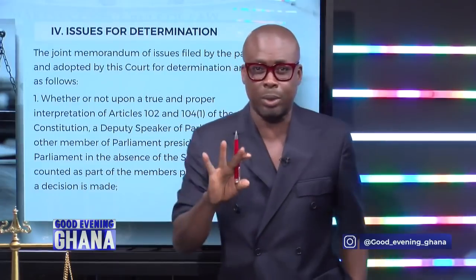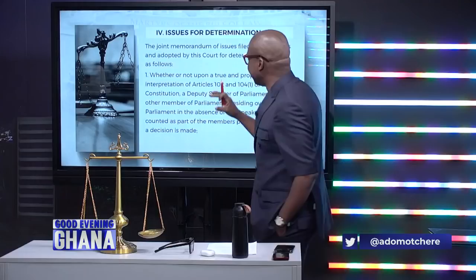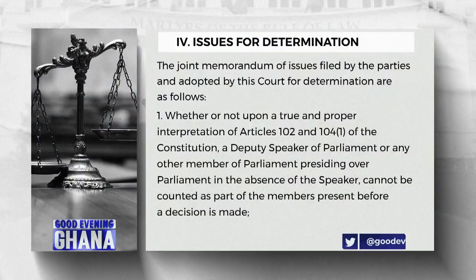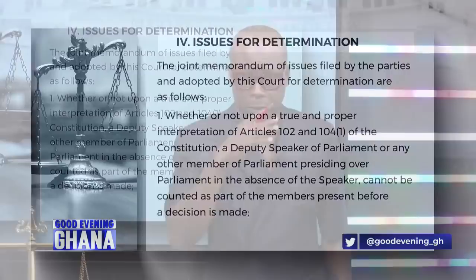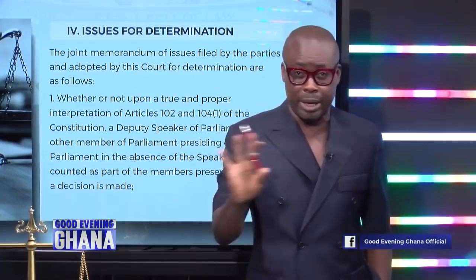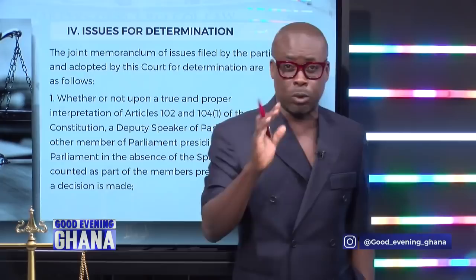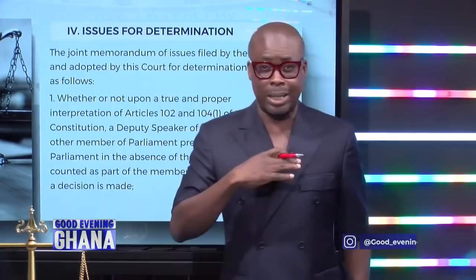Let's begin with the issues that the court decided to settle. There's a joint memorandum of issues filed by the parties and adopted by this court for determination. When people go to court, they agree on the issues to settle. Both parties agreed that these are the questions the Supreme Court will answer — it is called the memorandum of issues. When the court begins to deal with the issues, both parties have agreed that these are the issues to be dealt with.